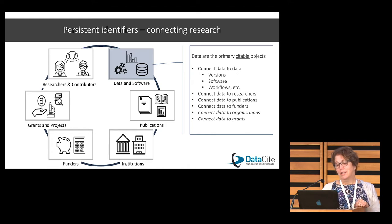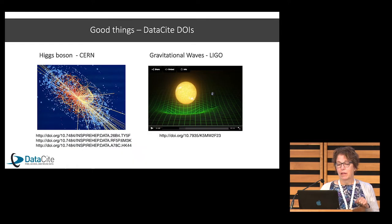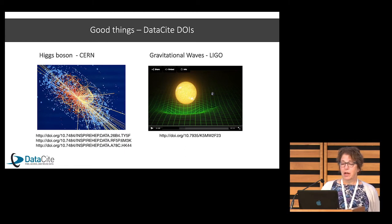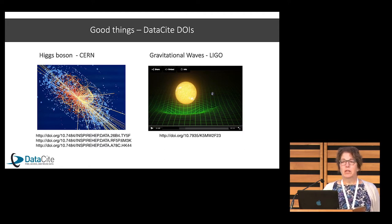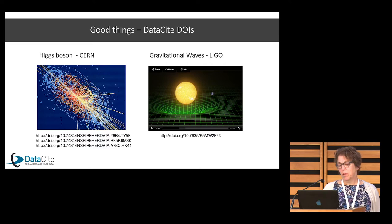And hopefully connecting data to grants — those are things we're really working on with Crossref. At DataCite we're incredibly proud of all of our DOIs, but a few stand out worth noting. CERN has DOIs for the Higgs boson Nobel Prize-winning research, and also gravitational waves from LIGO. There's all kinds of data within DataCite — some things like this, but also some very small data sets by small repositories.